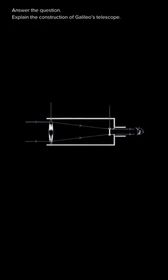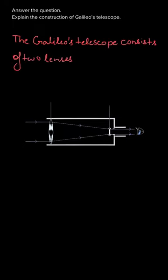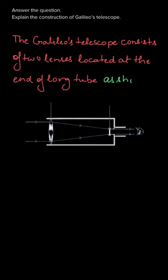So we have to write about that. Here we can see this is a Galileo's telescope. Galileo's telescope consists of two lenses which are located at the ends of the long tube, as shown.